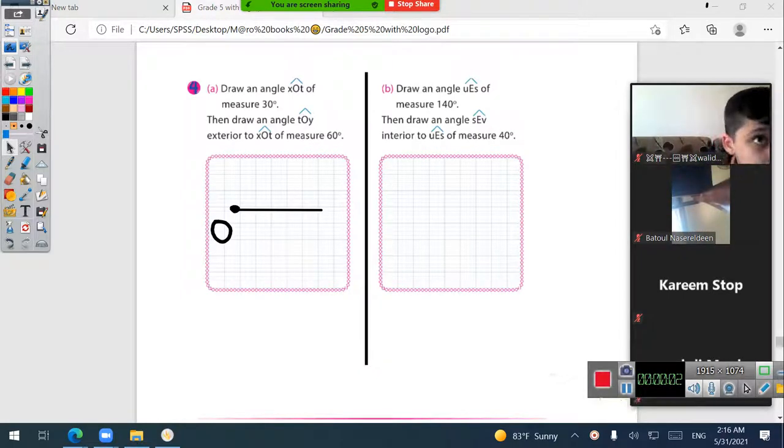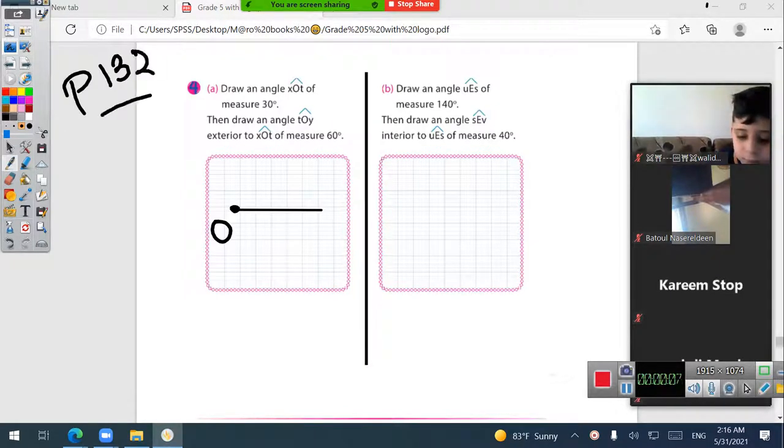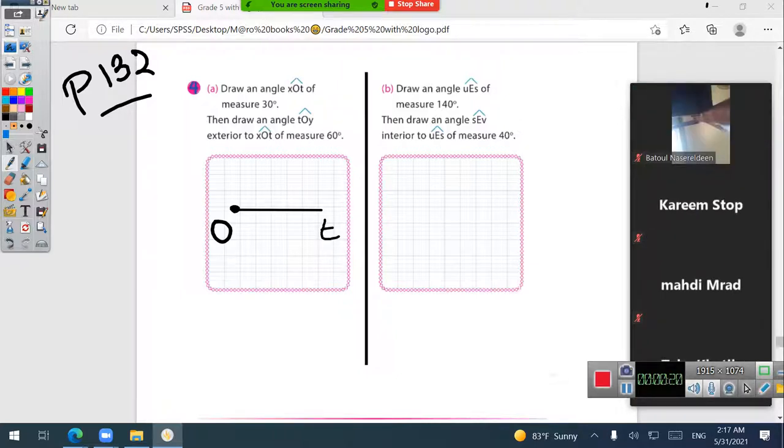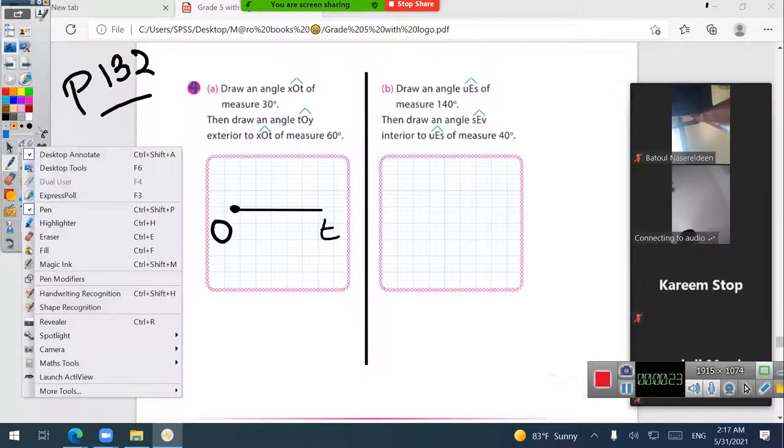Let's start. It's page 132. Draw an angle XOT of measure 30 degrees. As you know, we write the vertex, and I will draw one side, then get my protractor to continue drawing the figure.